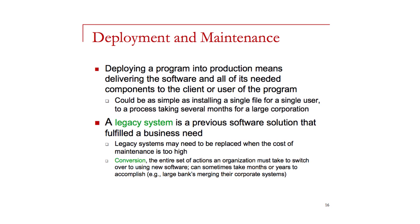The final phase is deployment and maintenance. Deployment means placing the program into the field with the user — this can range from installing a single program for one user to deploying a large system for a big corporation, ensuring all programs, databases, and dependencies are in place. A legacy system is a software system that has been in the field for a long time and is becoming increasingly costly to maintain, sometimes leading to migration to a new solution — as happens in bank mergers. Users may also come up with new requirements, requiring adaptive maintenance, while perfective maintenance involves fixing mistakes discovered later.